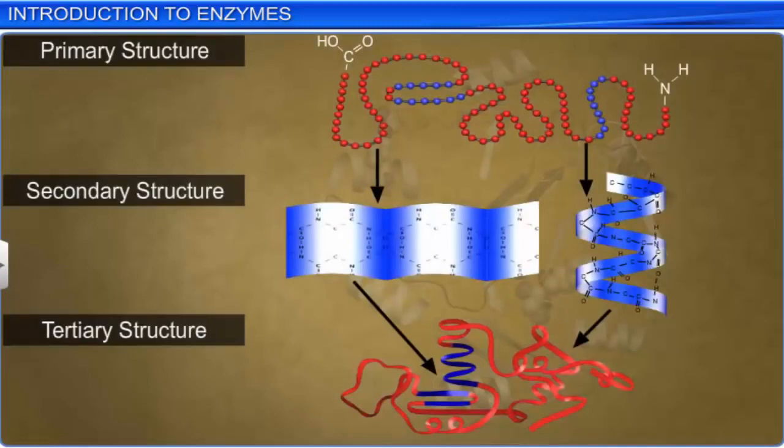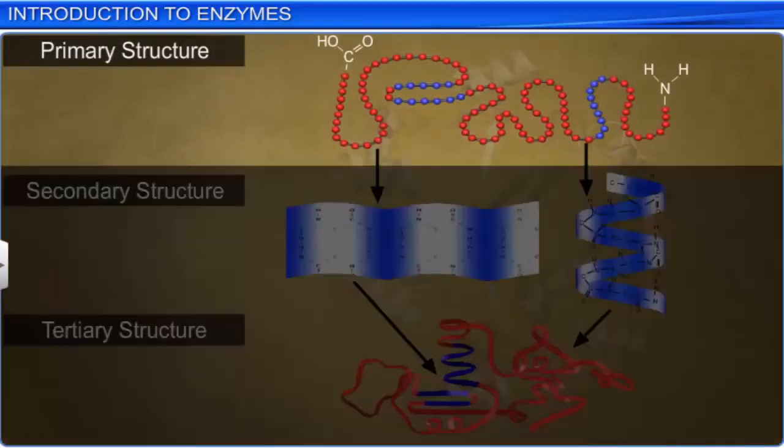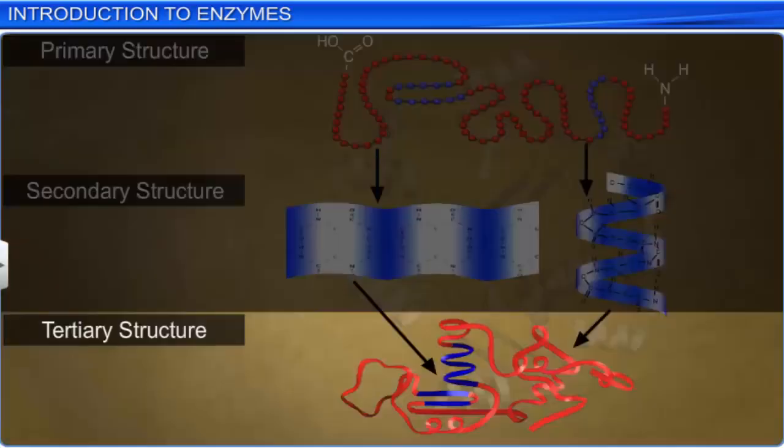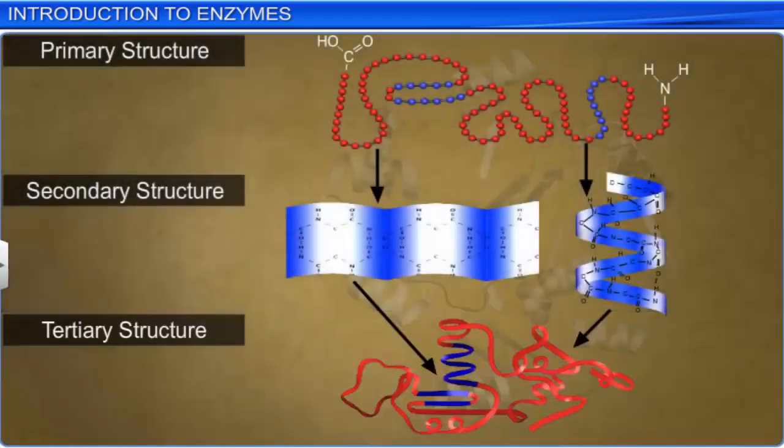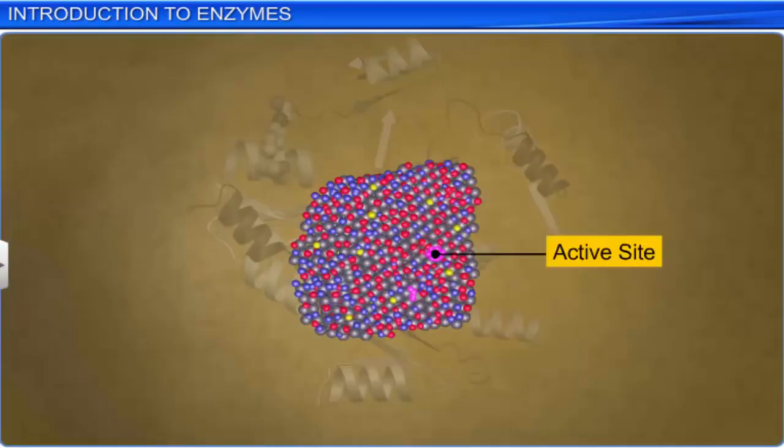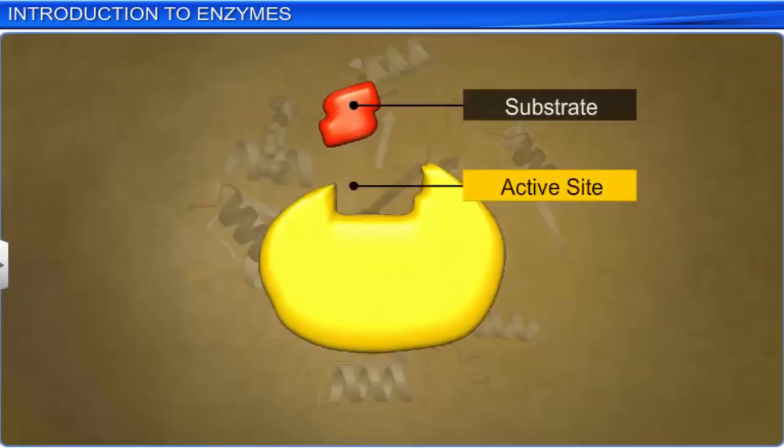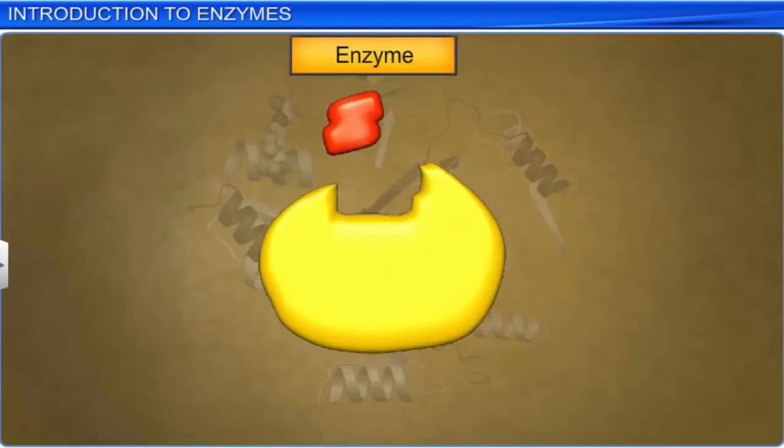Just as with proteins, enzymes have a primary, secondary, and tertiary structure. While the primary structure is an amino acid sequence, the tertiary structure folds and crisscrosses on itself, creating many crevices or pockets. One of these pockets is called the active site. A substrate fits into this active site of the enzyme and enables it to catalyze reactions at a high rate.